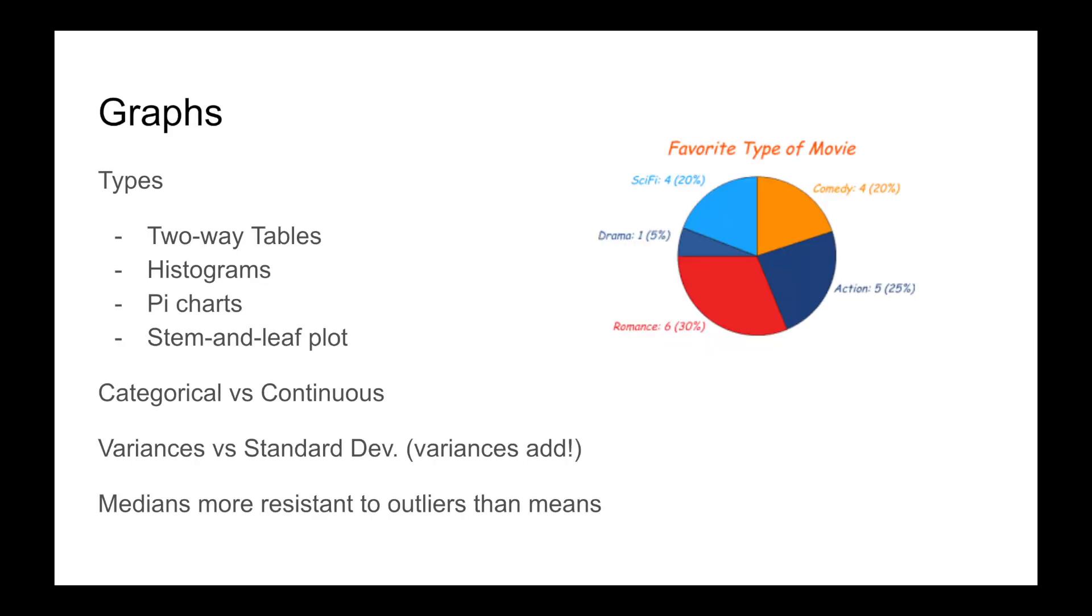Graphs: This means understand how to interpret bar graphs, stem and leaf graphs, histograms, pie charts, and two-way tables. Know continuous versus categorical data, in other words qualitative versus quantitative.